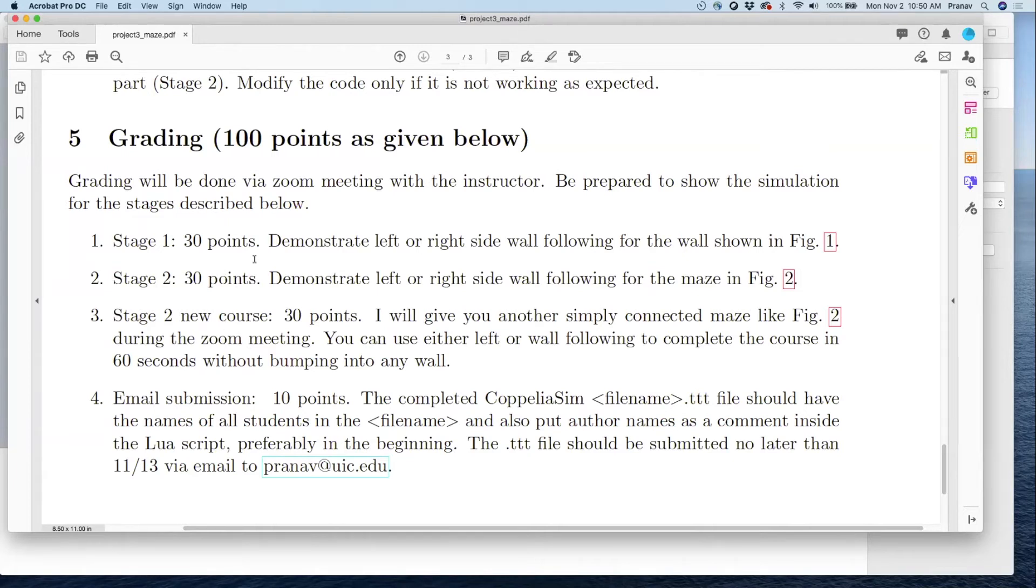I'm planning to do simple changes to this maze so you're tested on those things. If you look at the grading, there are three parts, but four parts to it: complete stage one, complete stage two, which is basically the course I've given you in stage two, a new course will be simple modifications of the original stage two course. I may not ask you to show me all three. Most likely I will ask you to do number three. And then if you don't do well in that, then I will ask you to show me stage one.